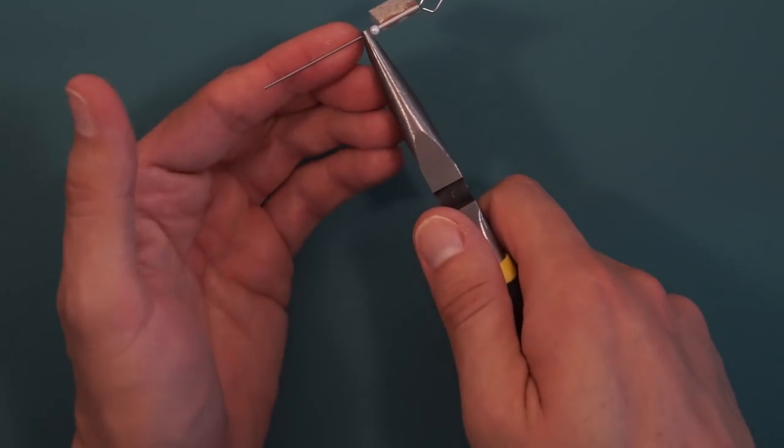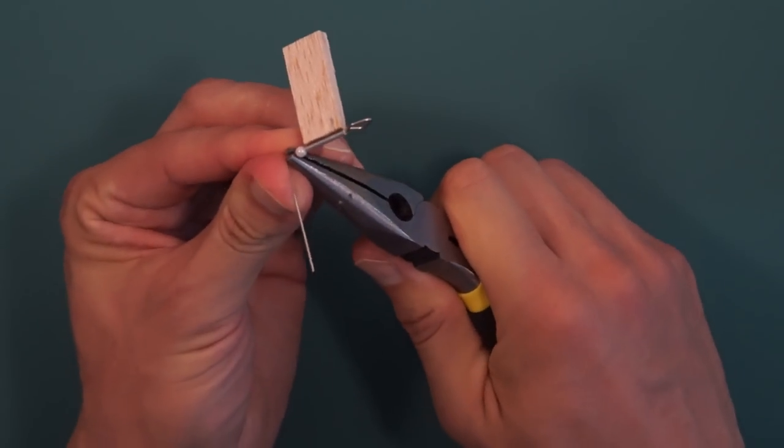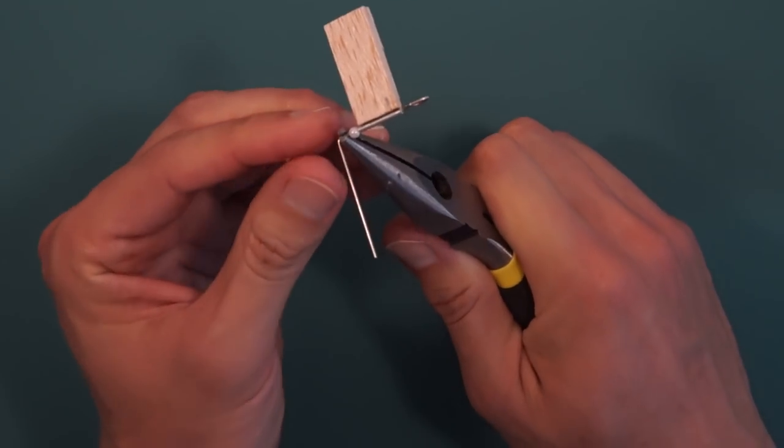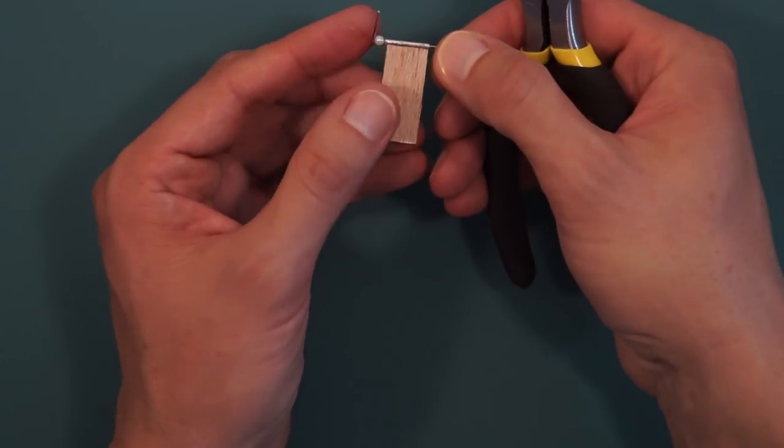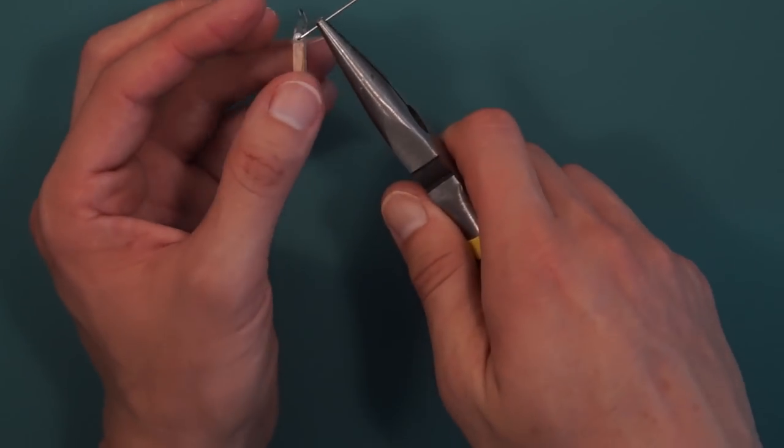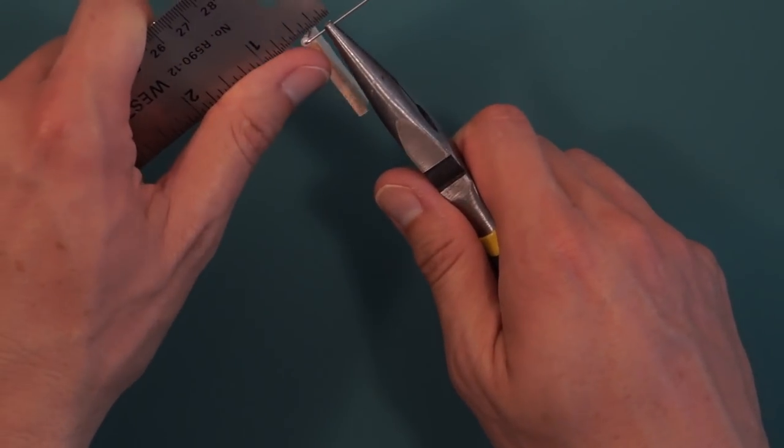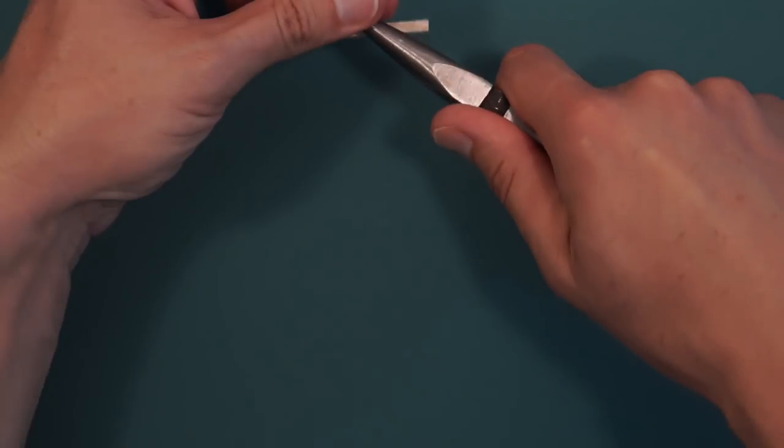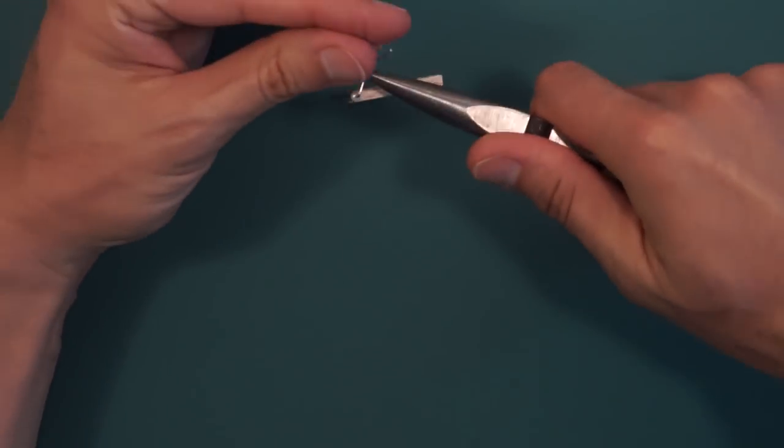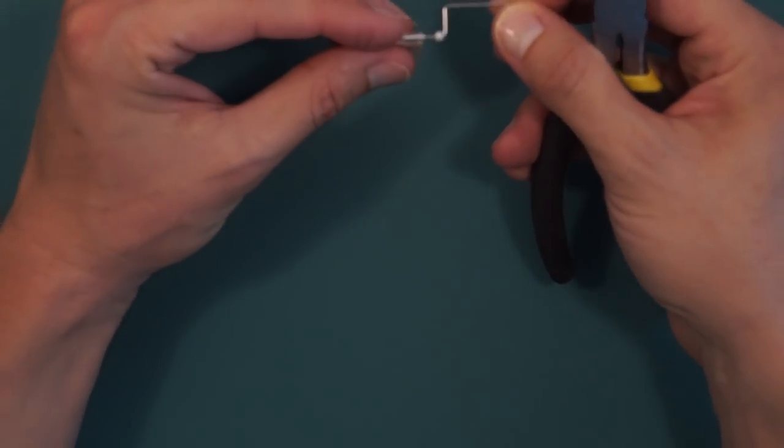Make the first bend just 90 degrees straight up toward you. Then we'll make the second bend three-eighths of an inch, bend that one straight up. Now we have two 90-degree bends.